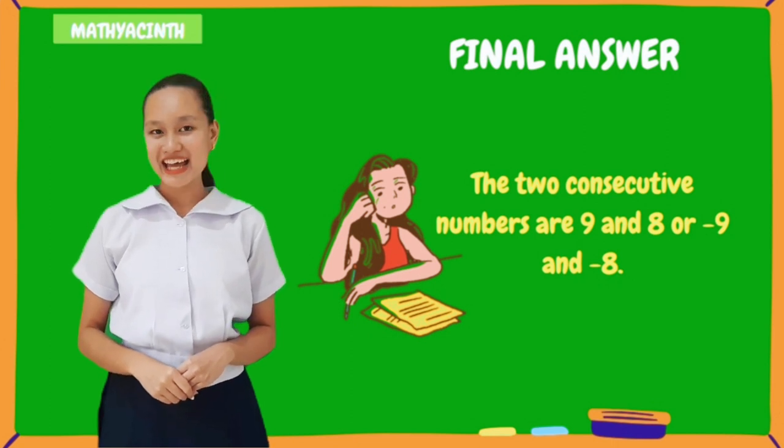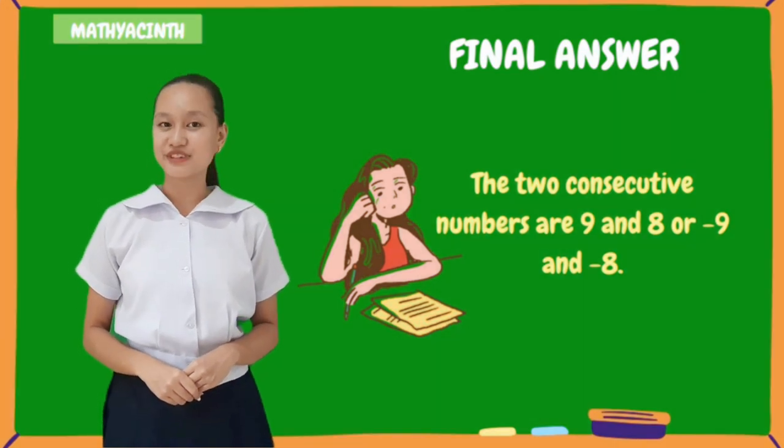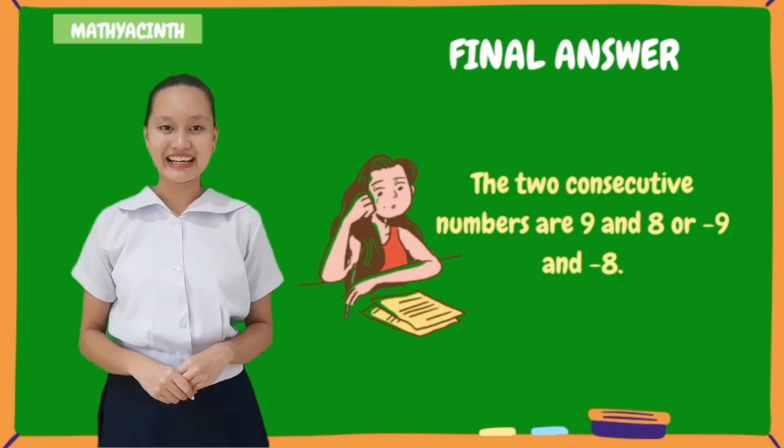And letter F for the final answer. The two consecutive numbers are 9 and 8 or negative 9 and negative 8.